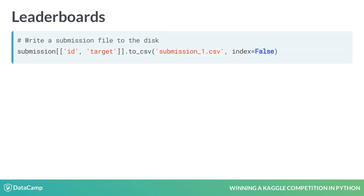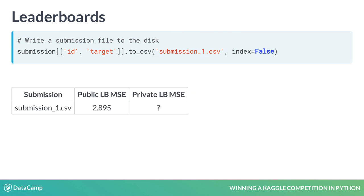In the previous lesson, we prepared the submission file and wrote it to disk. Now we can go to the competition website and upload our submission. Usually, competitions have a limit of about 5 submissions available per day. Once we submit our file, Kaggle internally calculates the competition metric on the whole test set, but shows the result only on the public part.